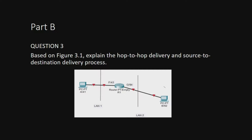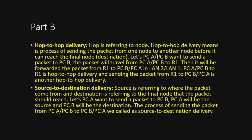For source-to-destination delivery: the source refers to where the packet originates, and the destination is the final node the packet should reach. Based on the figure, PC A sending data to PC B is the source-to-destination delivery. Explain what hop-to-hop is — the process of sending packets from one node to another before reaching the final node — then give the figure example to get full marks.